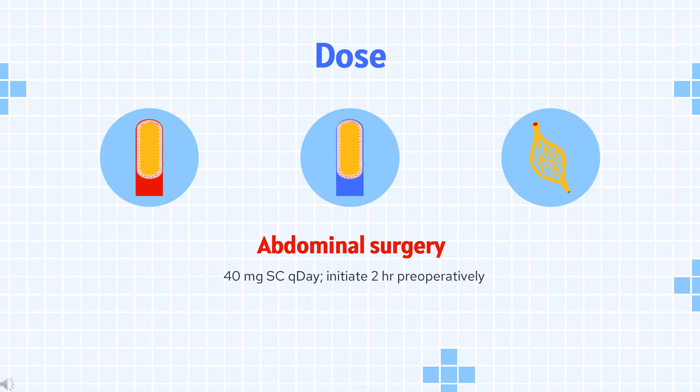Dose – Deep Vein Thrombosis Prophylaxis: Patients at risk undergoing abdominal surgery or hip or knee replacement surgery, as well as patients with severely restricted mobility during acute illness. Abdominal surgery: 40 mg SC once daily, initiate 2 hours postoperatively. Knee or hip replacement surgery: 30 mg SC every 12 hours, initiate therapy 12–24 hours postoperatively, continue for 10 days or up to 35 days postoperatively, or until patient is on anticoagulant therapy.